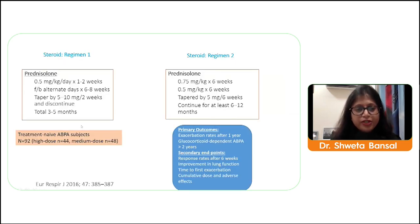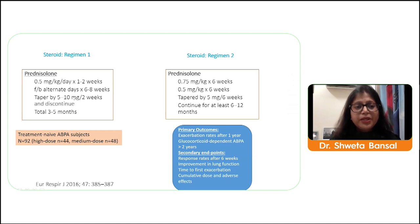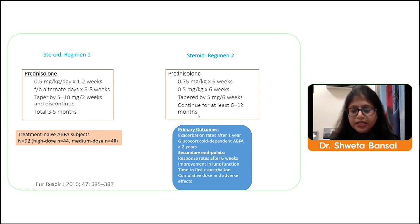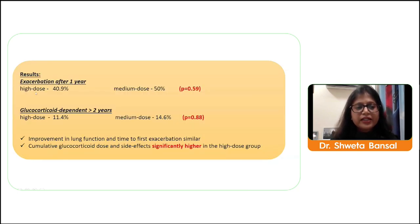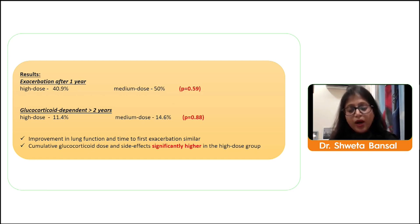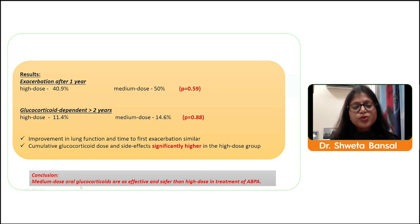Steroids are the first-line treatment. A 2016 RCT from PGI compared low-dose steroid regimen — 0.5 mg/kg/day tapered over three to five months — versus 0.75 mg/kg tapered over six to twelve months. The study showed that exacerbation rate after one year and glucocorticoid dependence after two years were similar in both groups. Therefore, low to medium dose oral glucocorticoids are equally efficacious and a safer alternative to high dose, which is not recommended.